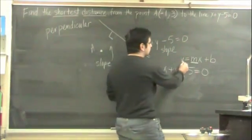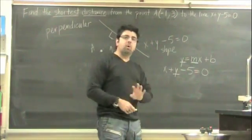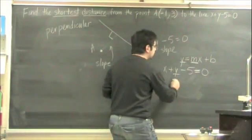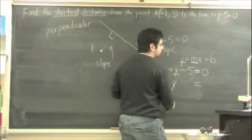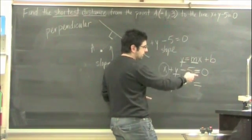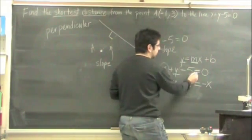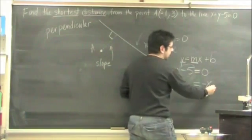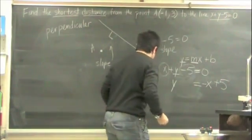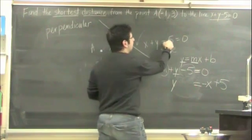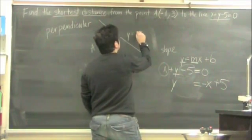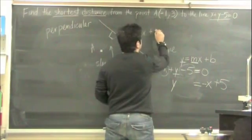We want to keep y on one side of the equal sign and bring all the other terms to the other side. We're going to keep this y. Here's our equal sign. We're going to be moving this x over, and notice how it's positive x, so if we bring it over to the other side, it becomes negative x. We're going to bring this negative 5 over the equal sign, and it becomes positive 5. In other words, this equation can now be rewritten as y equals negative x plus 5.